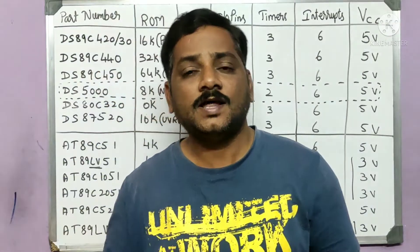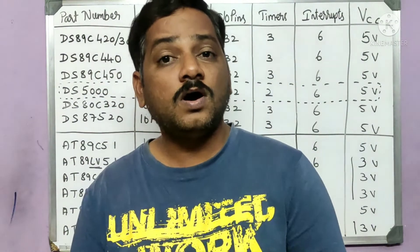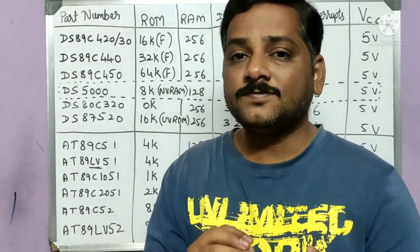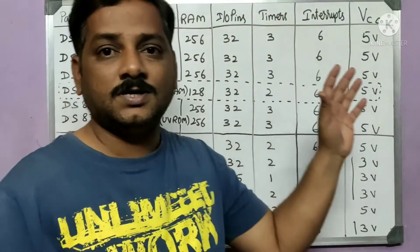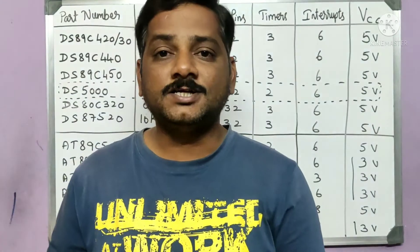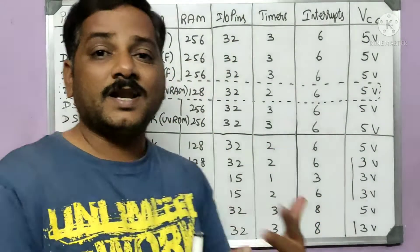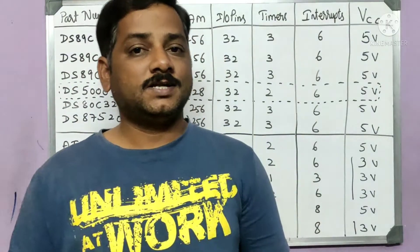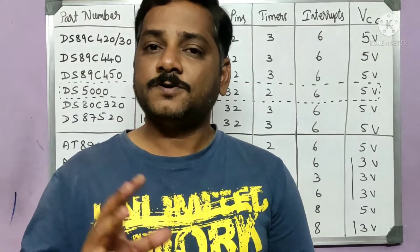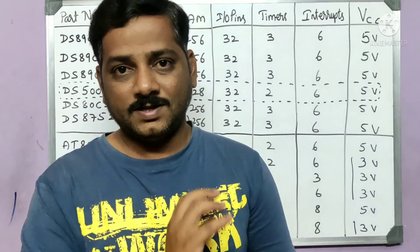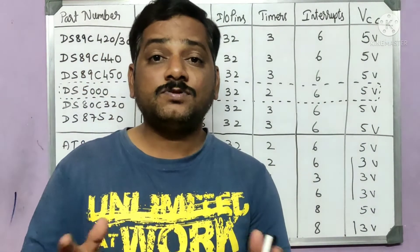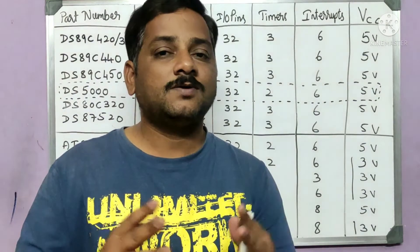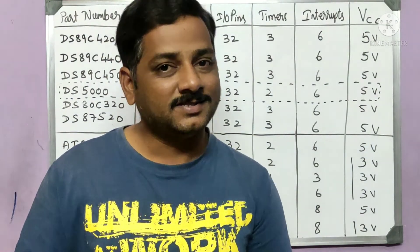There are many manufacturers — Intel, Philips, IBM, and others — all developing and manufacturing 8051-compatible microcontrollers. The differences lie in parameters such as timer count, interrupt count, RAM size, and ROM size. These are the main features to observe when selecting a microcontroller, as each producer has their own design. I hope the different versions of microcontrollers are now clear. If so, share with your friends and don't forget to subscribe to the channel.